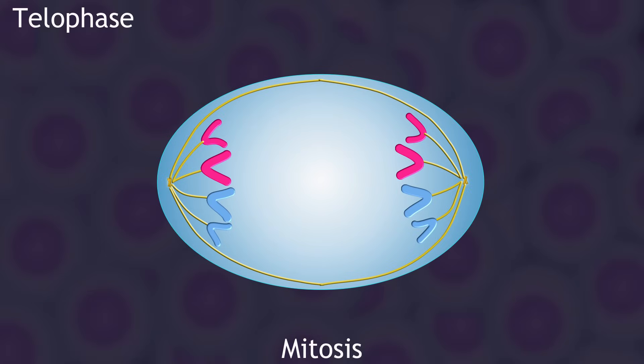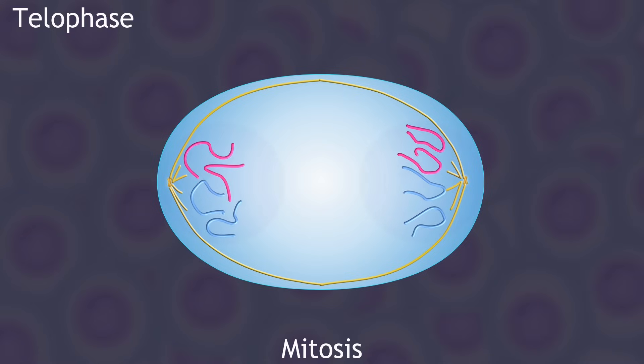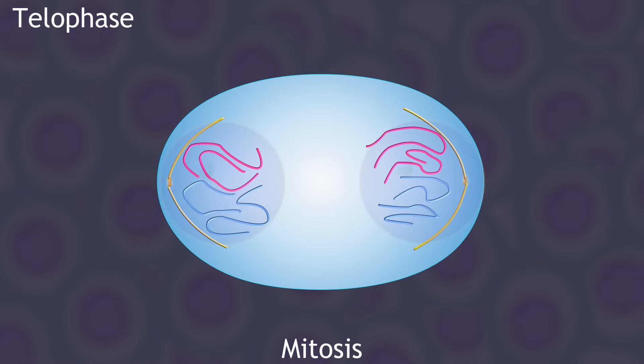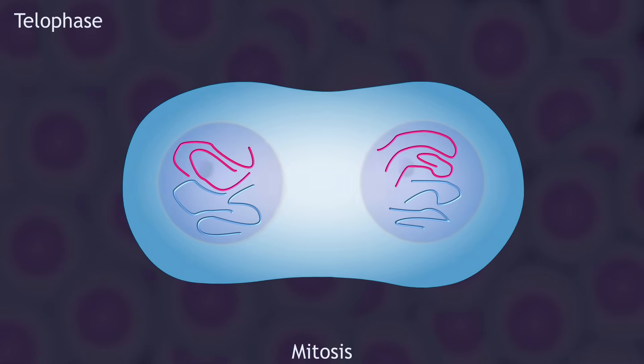Telophase is basically the reverse of prophase. Each newly formed daughter cell is going to start its new life in interphase, so we have to undo all the mitosis machinery that helped the cell divide, back to normal cell life. The chromosomes uncoil to form chromatin, the nucleus returns, and the spindle apparatus breaks down because it is no longer needed.